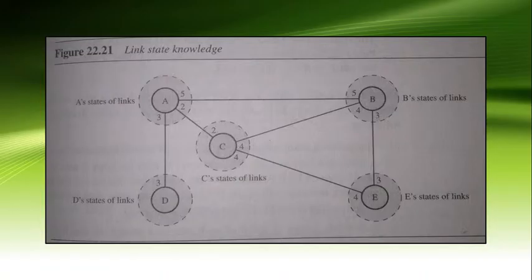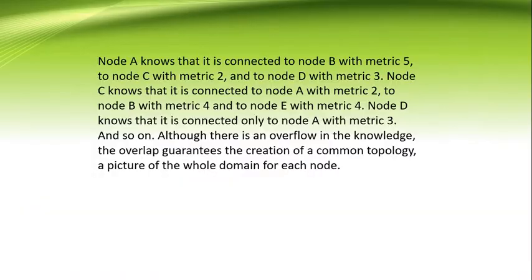Link state knowledge example: Node A knows that it is connected to Node B with metric 5, to Node C with metric 2, and to Node D with metric 3. Node C knows that it is connected to Node A with metric 2, to Node B with metric 4, and to Node E with metric 4.